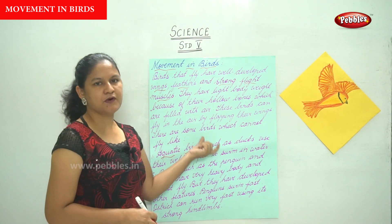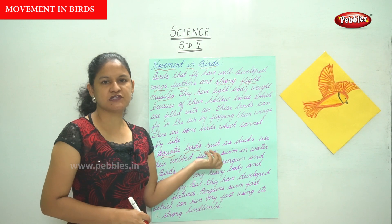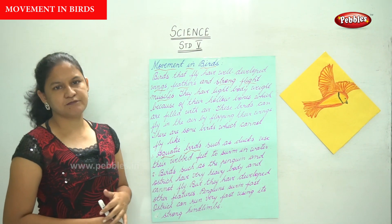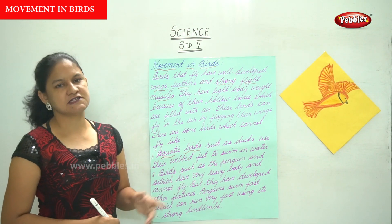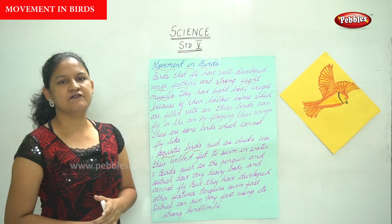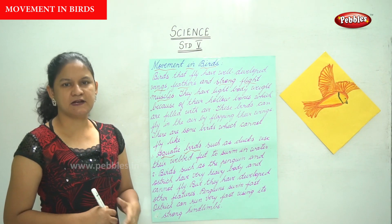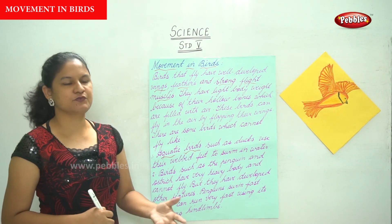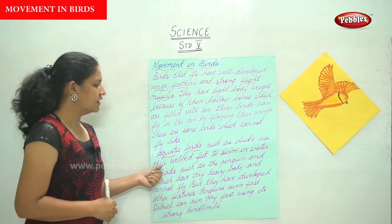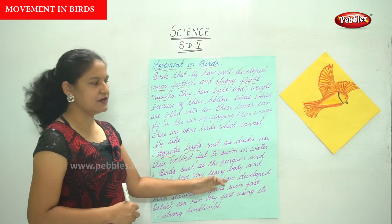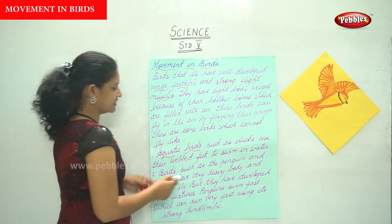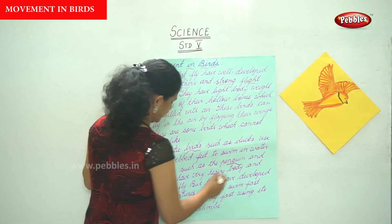These aquatic birds such as ducks use their webbed feet to swim in water. Talking about birds which cannot fly, we have the aquatic birds such as ducks, which have webbed feet that help them swim in water.